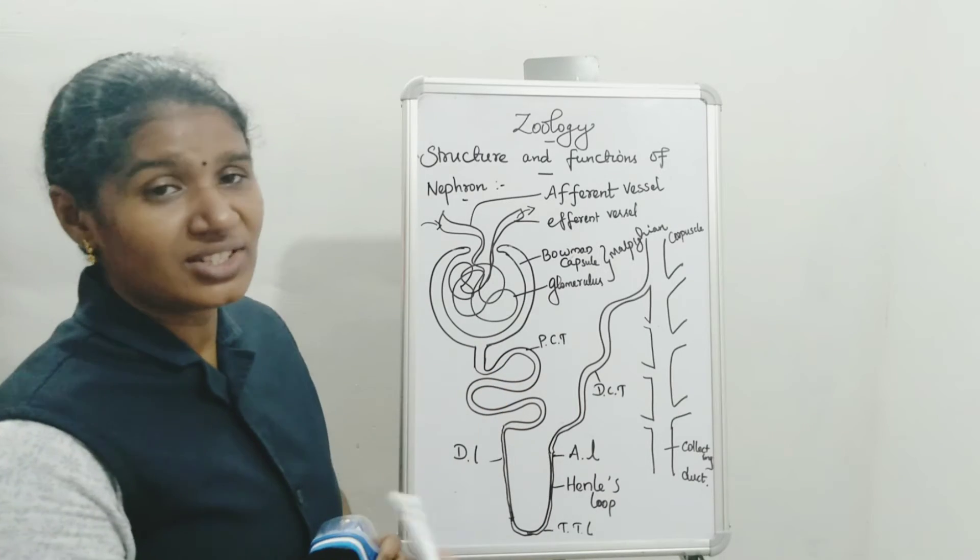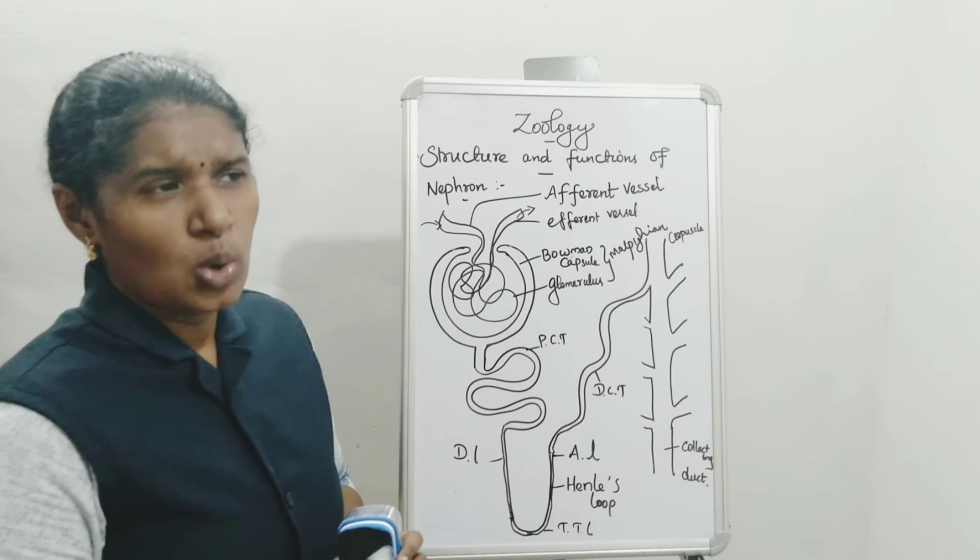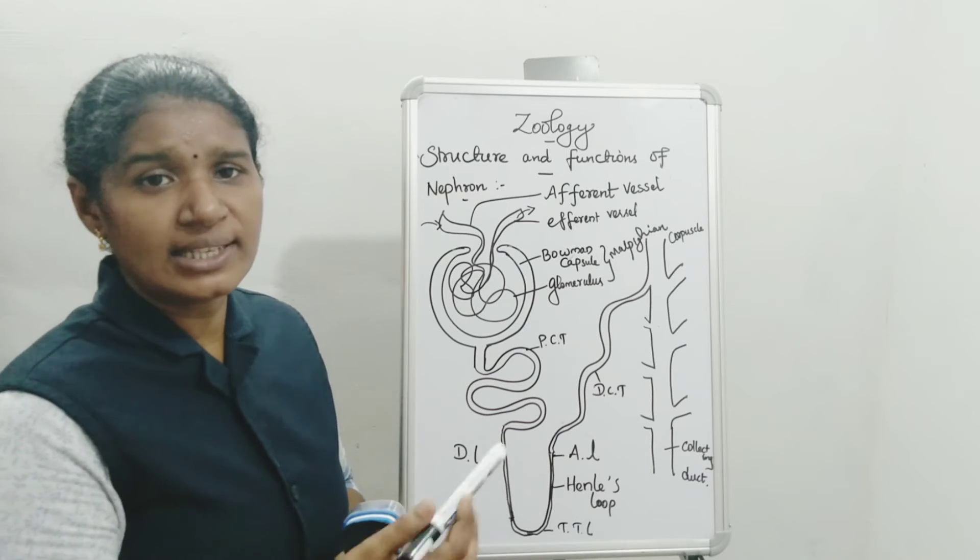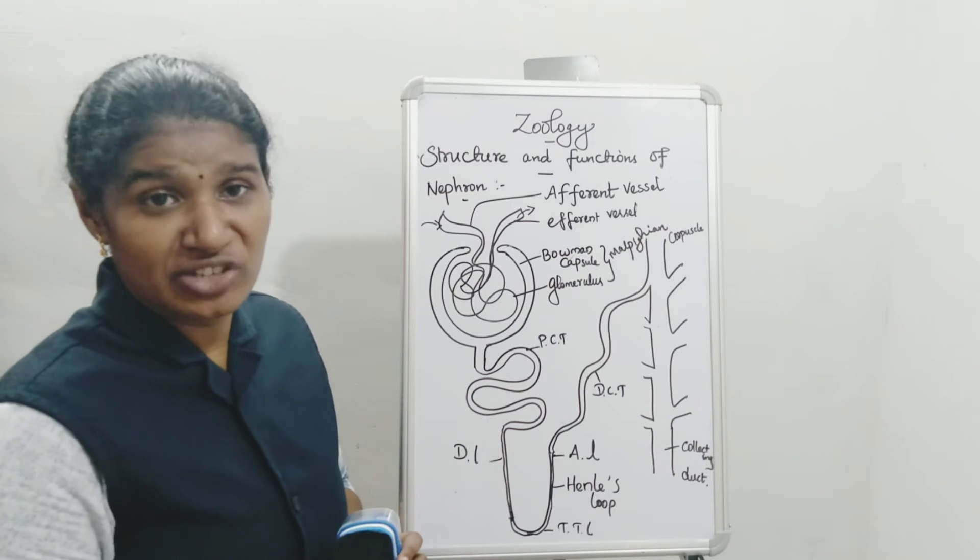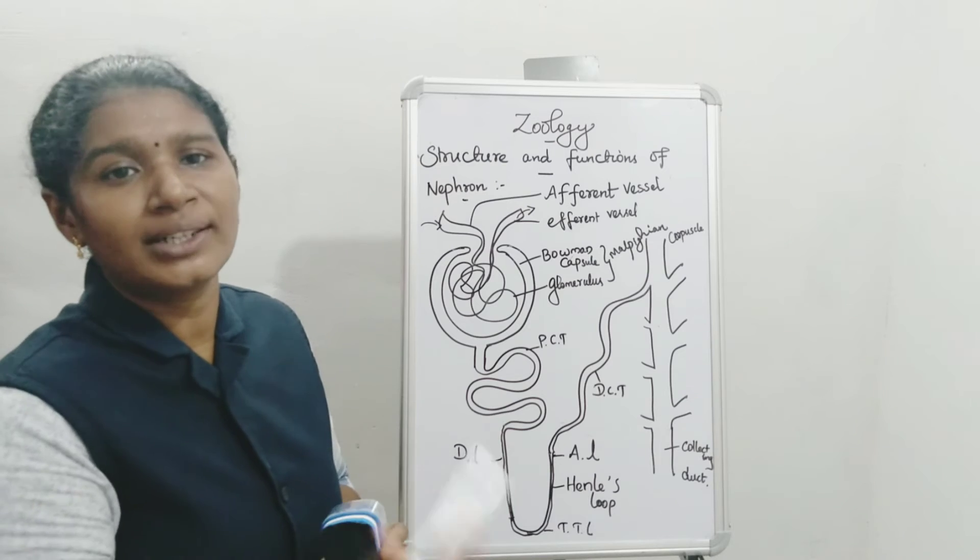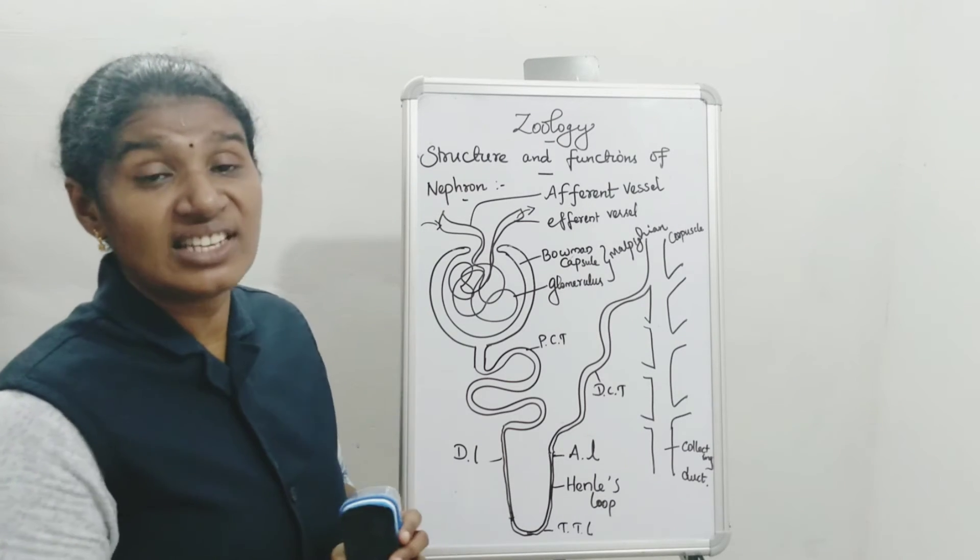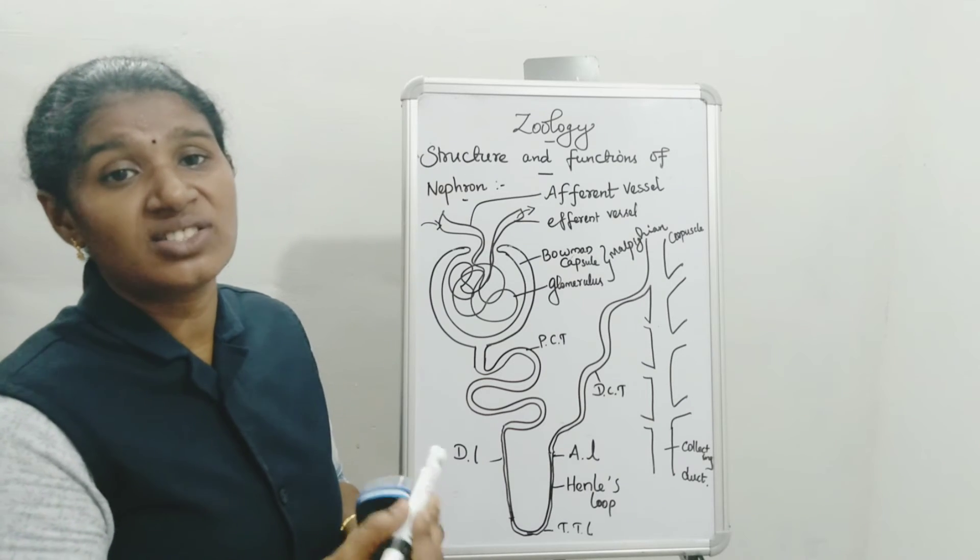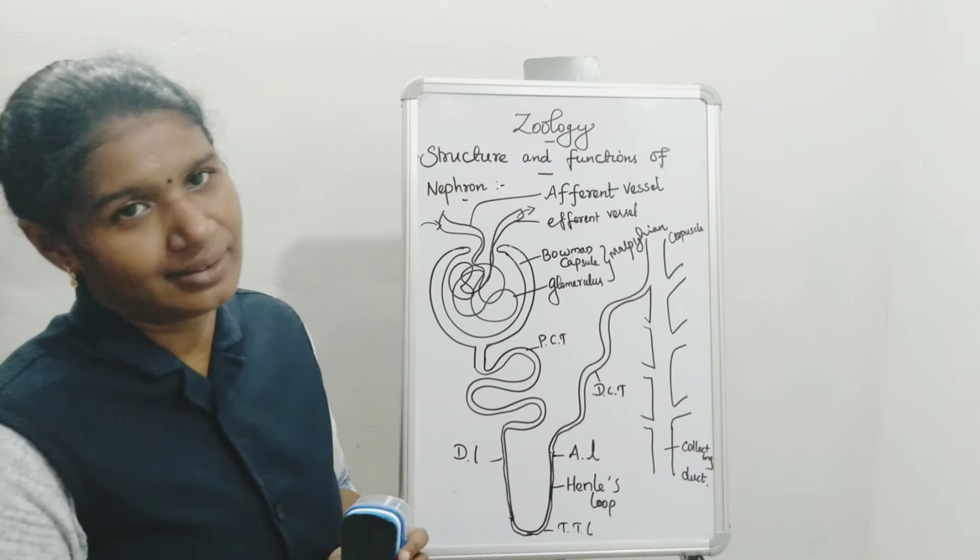It filters the blood. After, reabsorption. What materials are present in the blood, again they are reabsorbed, like sodium, potassium, glucose. These wanted contents are again reabsorbed. And secretion. It secretes hydrogen ions and everything. The walls of the tubules secrete these.